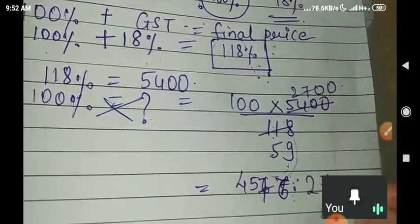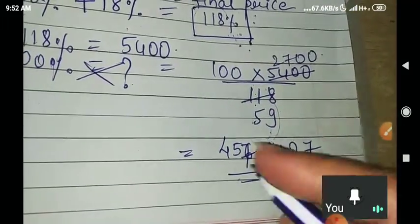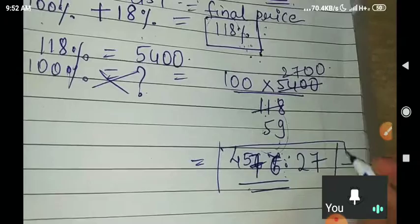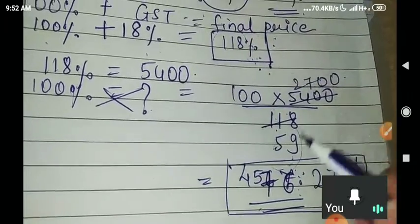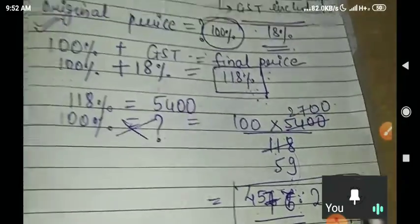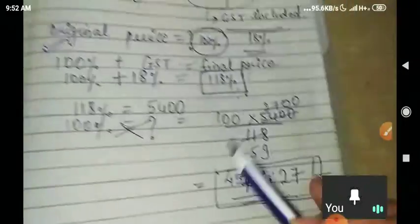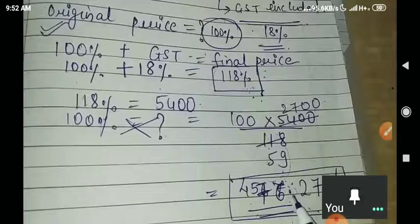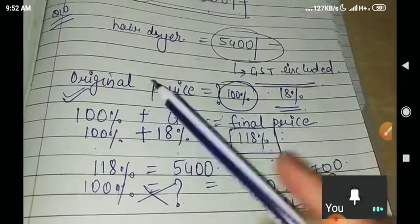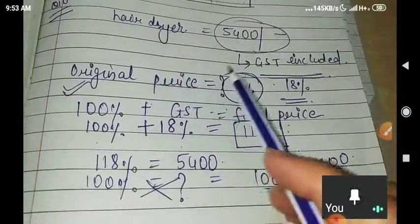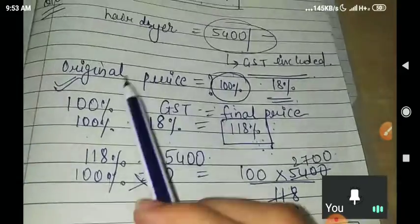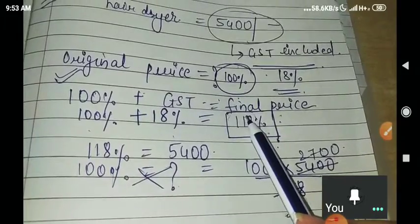You will get ₹4,576.27. This is the final cost of the hairdryer before GST was included. We were given the final price of ₹5,400.